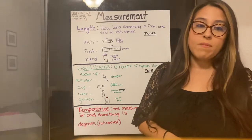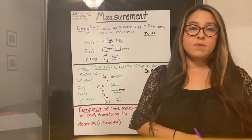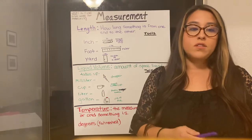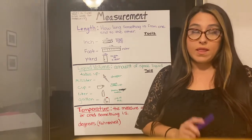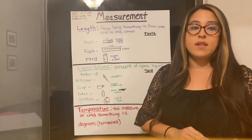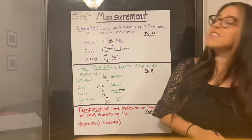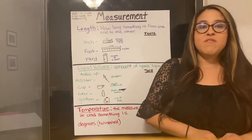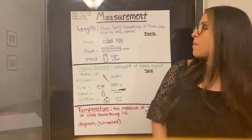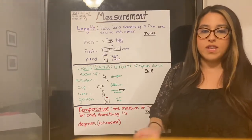Hello, this is a third grade math lesson. The content objective is for students to be able to identify the appropriate tool to measure the length of an object, the volume of a liquid, and the temperature. So hello everyone. Today we are going to learn about different types of measurement and the tools that we need to measure things.